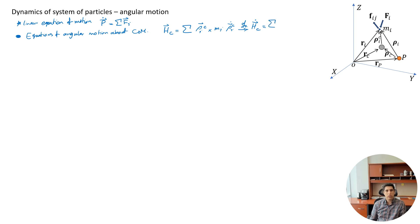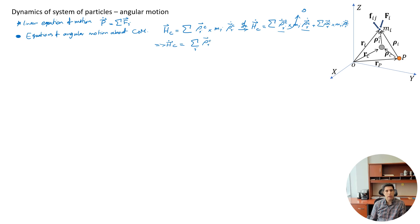The cross product of the first term gives rho-dot-c-i cross m-i rho-dot-c, and then the second sum gives summation of rho-c-i, the relative position. So h-dot-c equals summation of rho-c-i cross m-i times the relative acceleration.